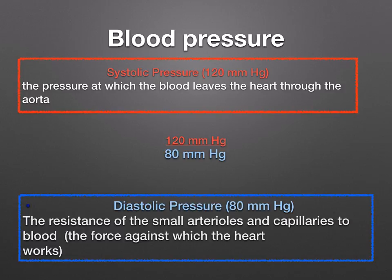When you measure blood pressure, it is expressed as the diastolic pressure beneath the systolic pressure. So a normal reading is 120 over 80 — systolic pressure over diastolic pressure.